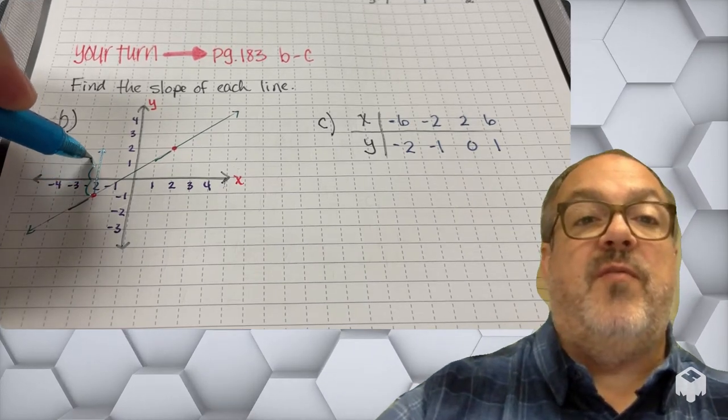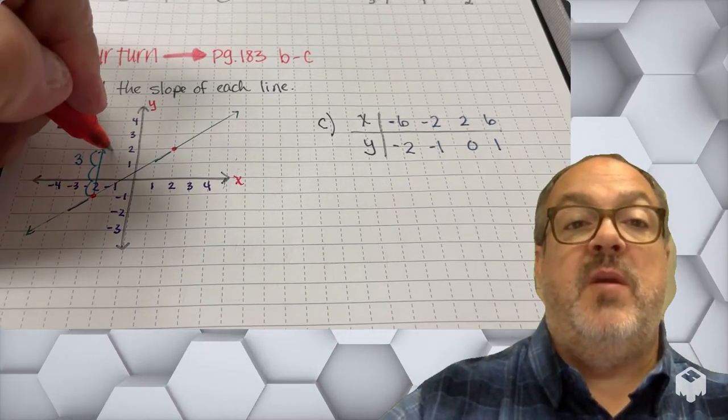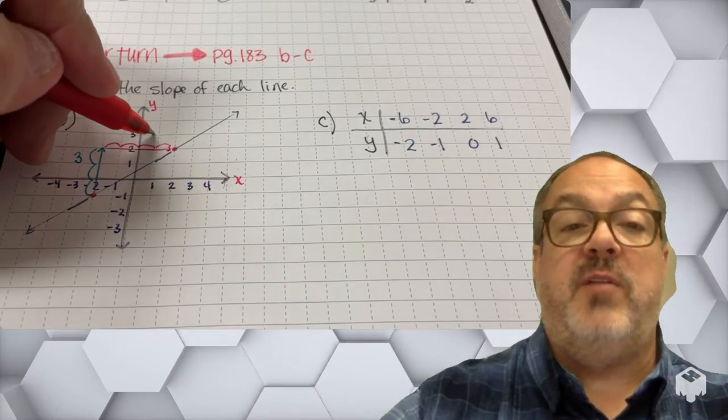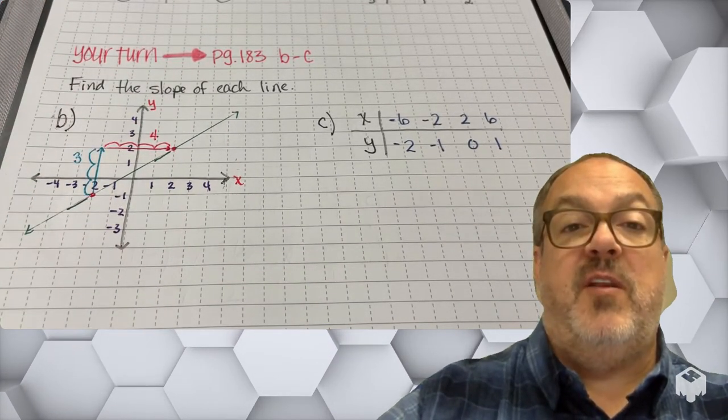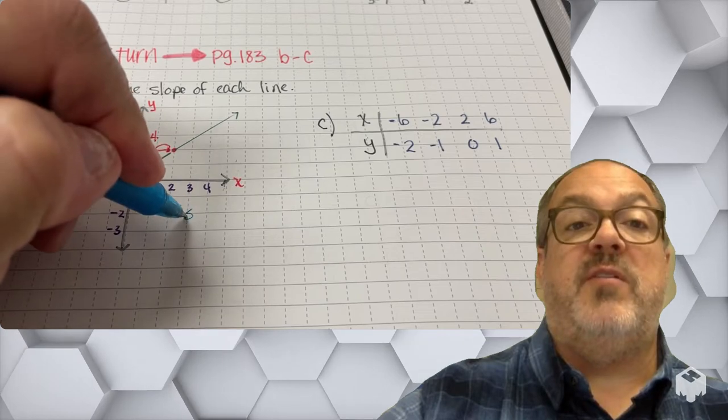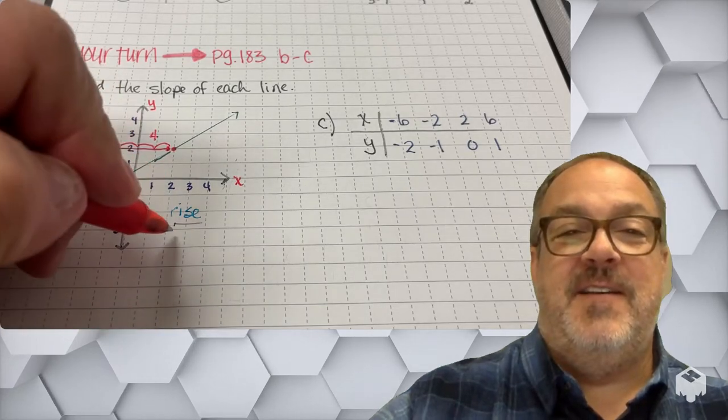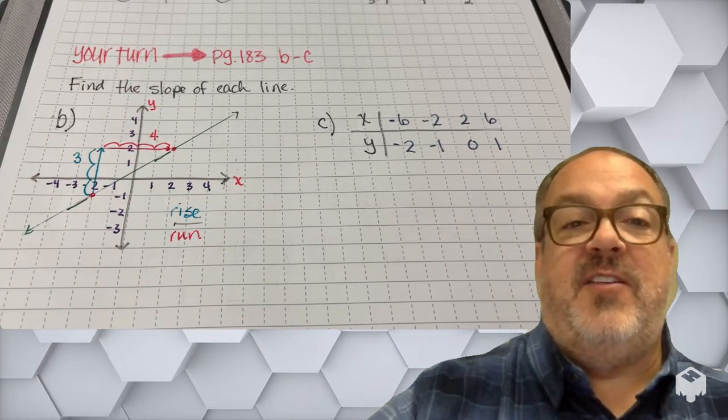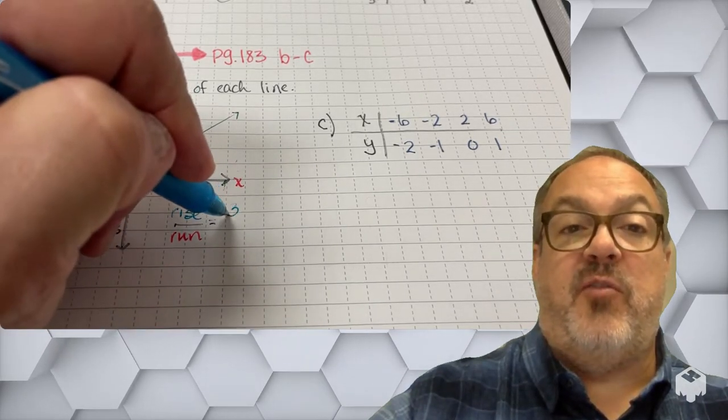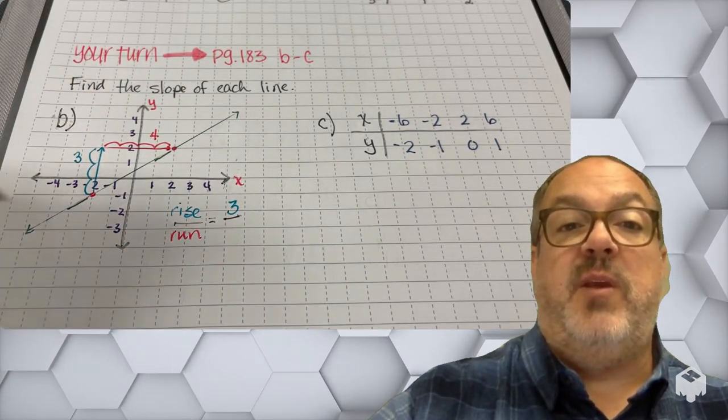All right, so the vertical change, or the rise, from these two points is 3 units. The horizontal change, or the run, is going to be 1, 2, 3, 4 units. So my slope is going to be the ratio of my rise, which was, I'm writing out the formula, rise over run. And so that rise, or change in my y value is 3, and then my run, or the change in my x value, is going to be 4.